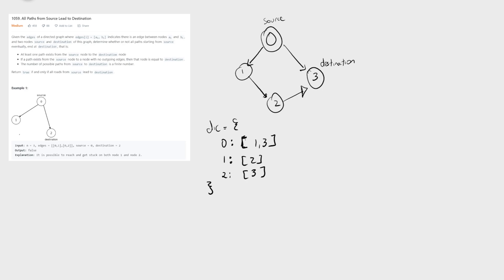We're going to use this dictionary in our depth-first search function. The function signature takes the source, destination, the dictionary we built, and a seen dictionary to avoid the infinite loop. Initially we check if we've seen the node we're at right now — if we have, that indicates we're in a loop, so we return false. We also check if there are any edges going out of the current node; if there are none, we make sure it's the destination — if not, we return false. Otherwise we iterate the graph using the dictionary. Initially we mark zero as seen.